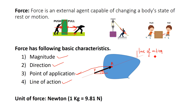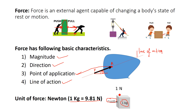The unit of force is Newton. We can represent it as: 1 kg is equal to 9.81 Newton. This means if you want to move a 1 kg block with an acceleration of 1 meter per second square, you require a force of 1 Newton. That force is called as 1 Newton force.